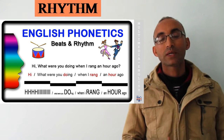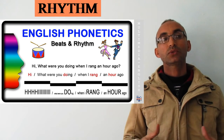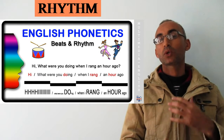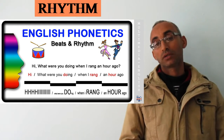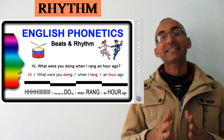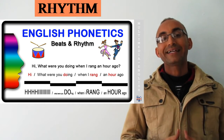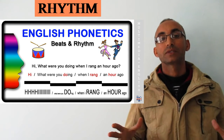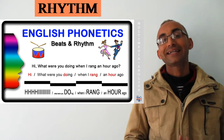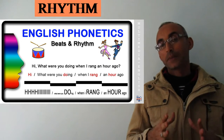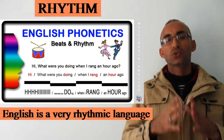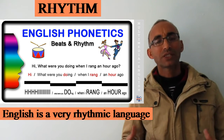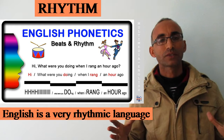Peace be upon you and welcome again to a new lesson of phonetics. Today we'll try to explore another essential feature of the English language and English pronunciation, which is rhythm. Now the English language is characterized by being a very rhythmic language. So what do we mean by rhythmic and by rhythm?